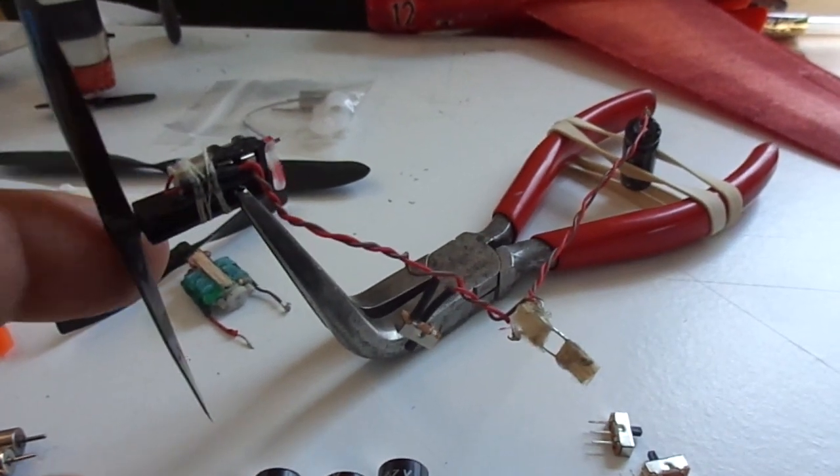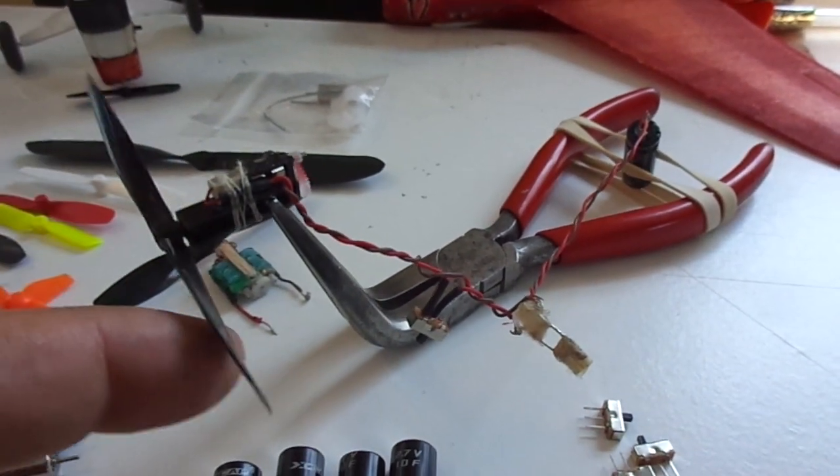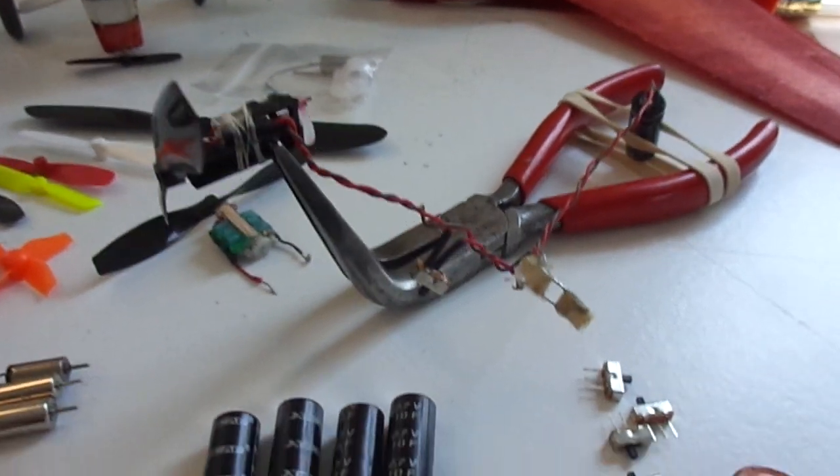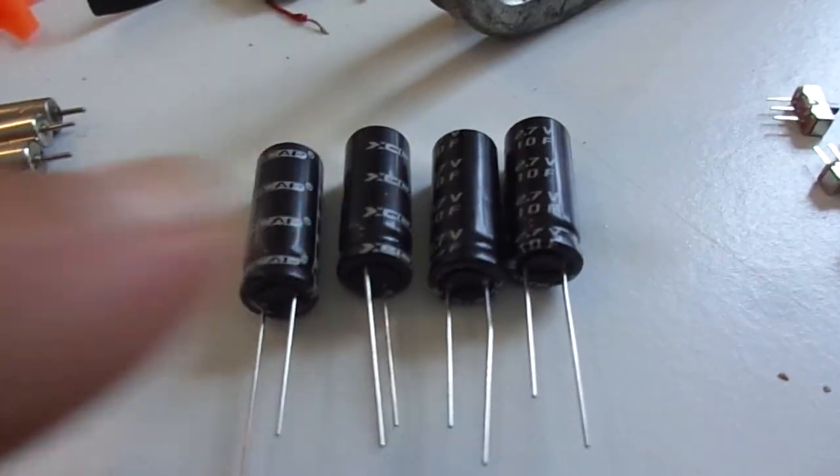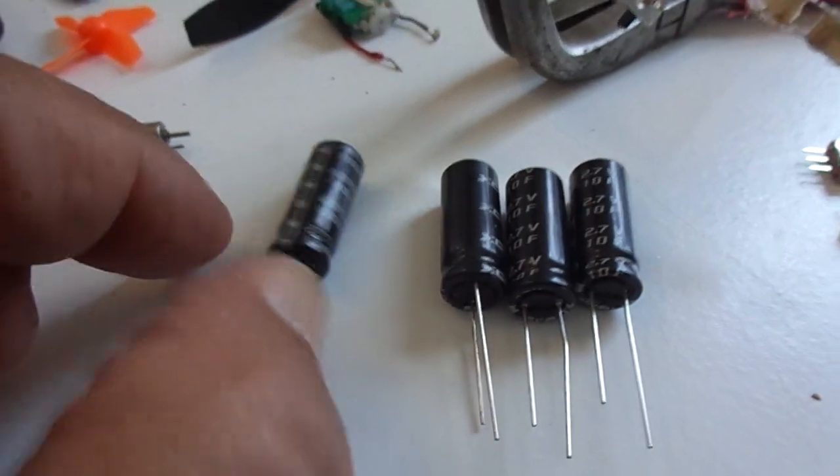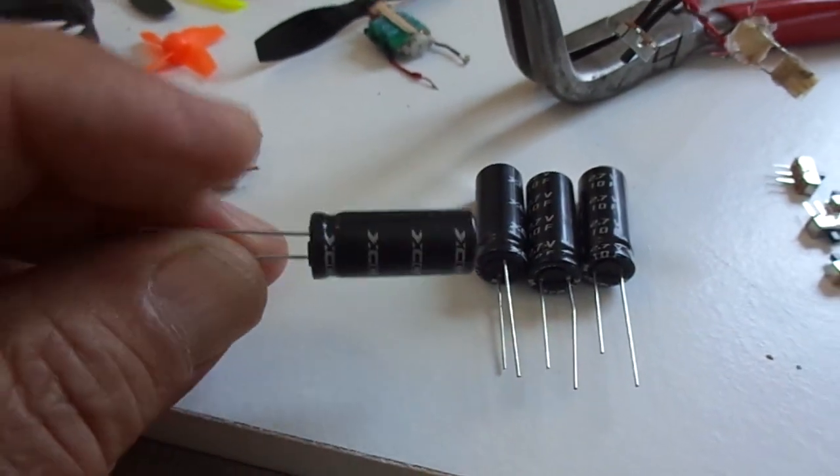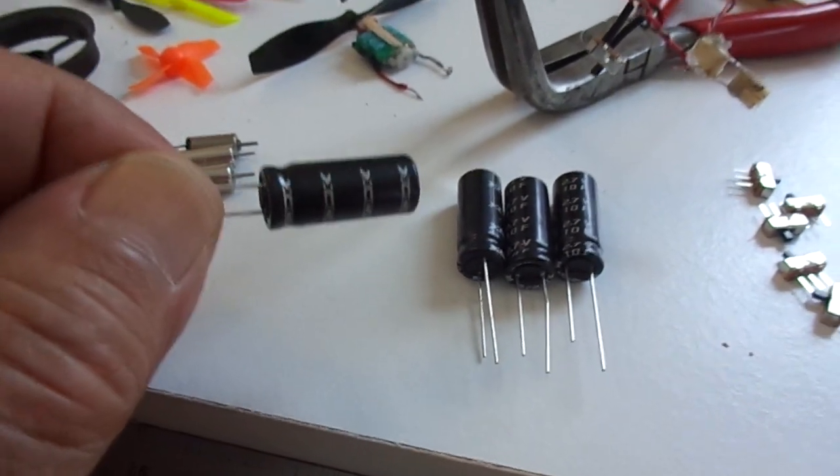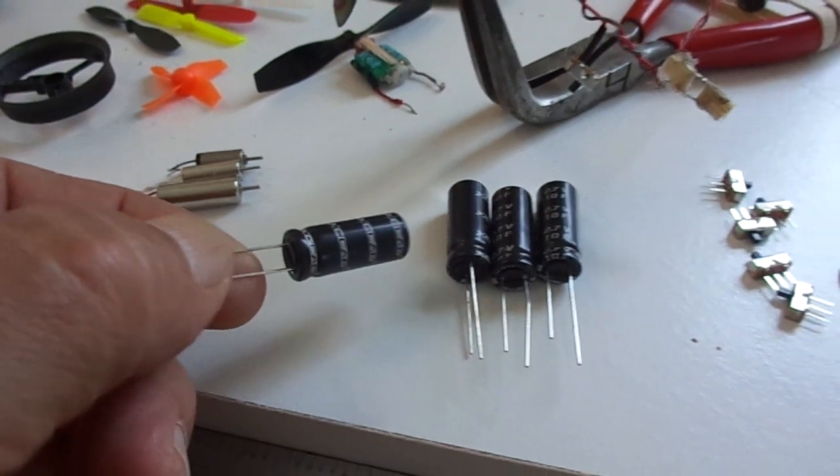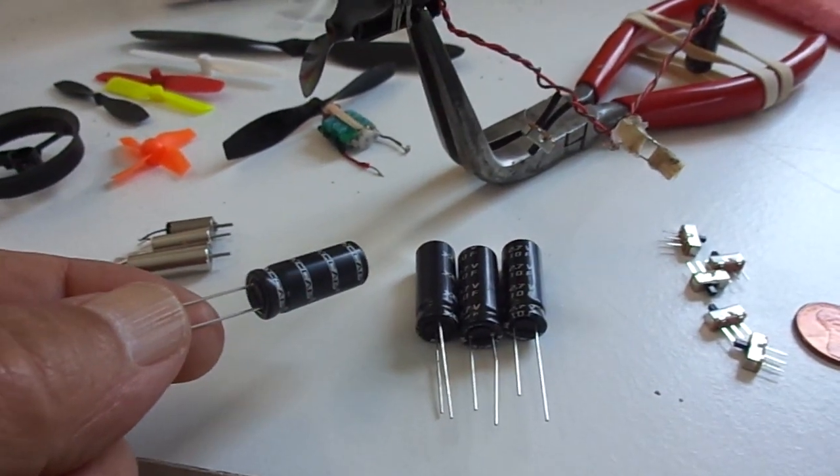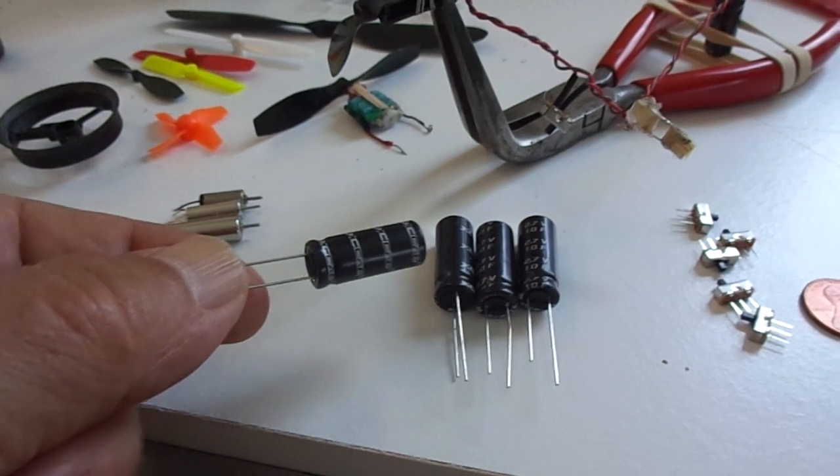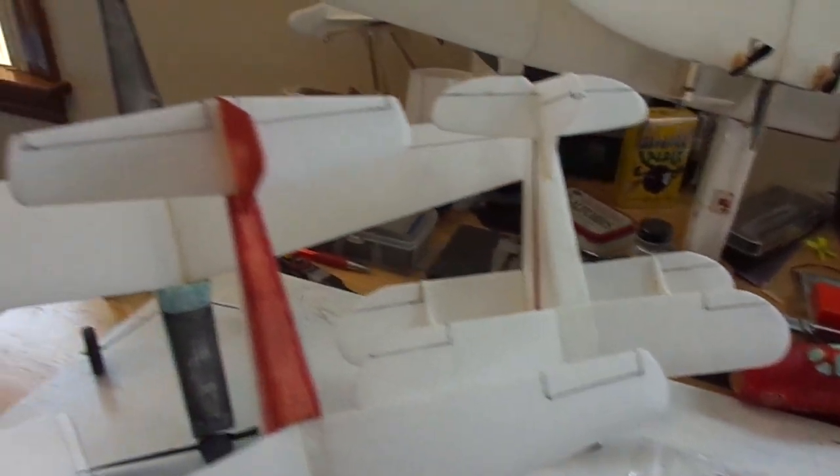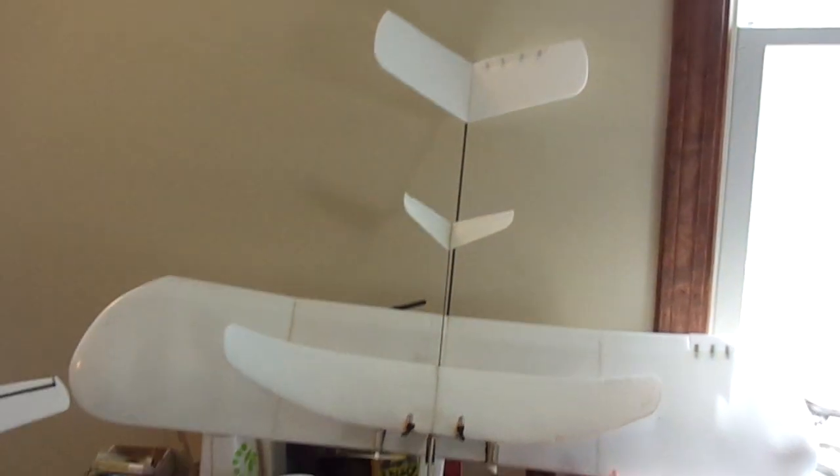These are the actual supercapacitors themselves, and these are 10 farad rating. These are the ones that we found very inexpensively from a Chinese supplier, but you could Google supercapacitor and you can find them in all sizes. All these smaller planes are powered by the same size 10 farad caps.